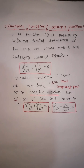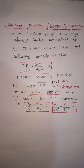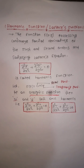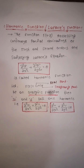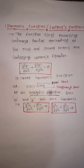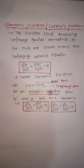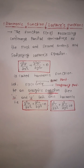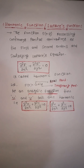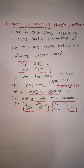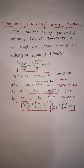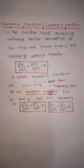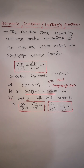The function that satisfies the Laplace equation is called a harmonic function. Let f(z) = u + iv, where u is the real part and v is the imaginary part. When f(z) is an analytic function — that is, when f(z) satisfies the conditions for analyticity — then both u and v satisfy the harmonic function conditions.